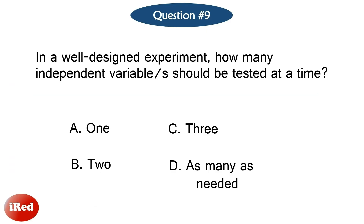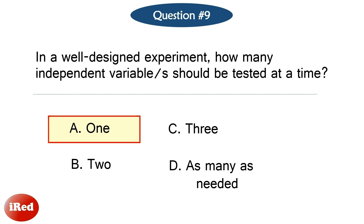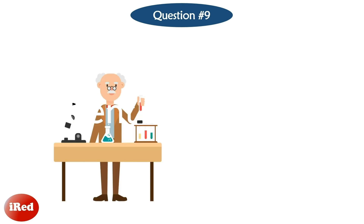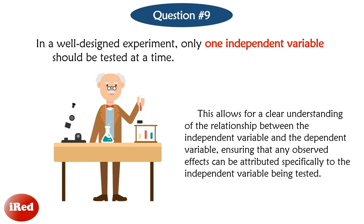Question number 9: In a well-designed experiment, how many independent variables should be tested at a time? This allows for a clear understanding of the relationship between the independent variable and the dependent variable, ensuring that any observed effects can be attributed specifically to the independent variable being tested.